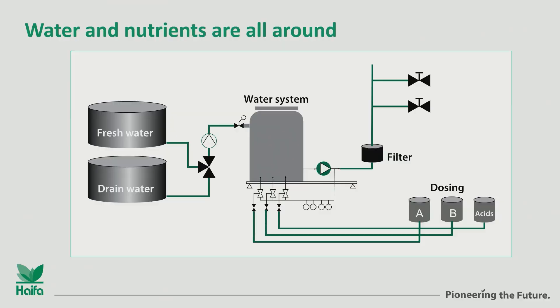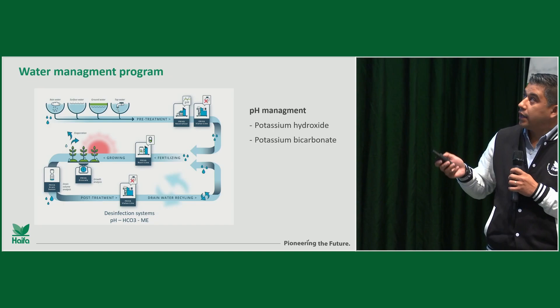In this scheme, we have water and nutrients everywhere. We have in our containers fresh water and containers of drain water. We have our mixing tanks, the stock solution tanks where we mix our nutrients, fresh water, and drain water — we inject these into our system. We have different points in the system and we can have different levels of pH and EC at these points. It's always very important to monitor at inputs and outputs.